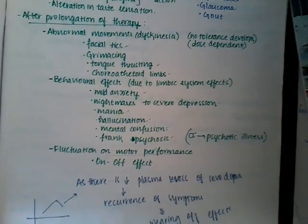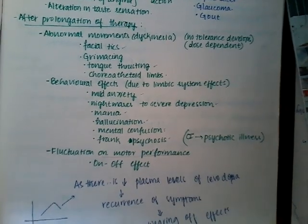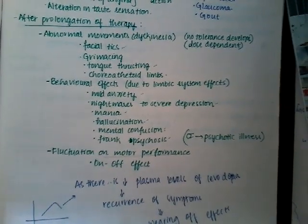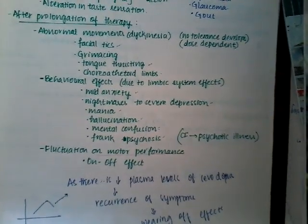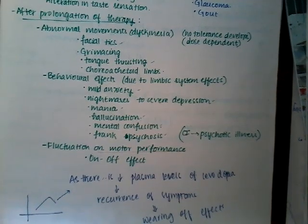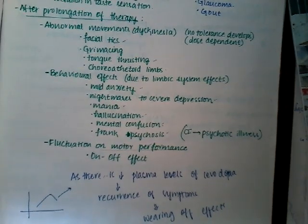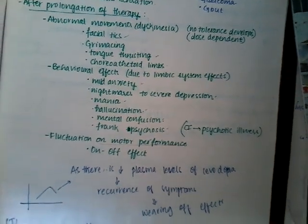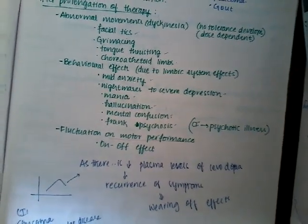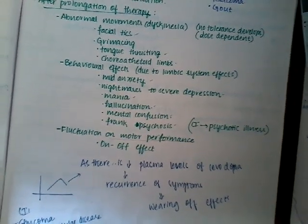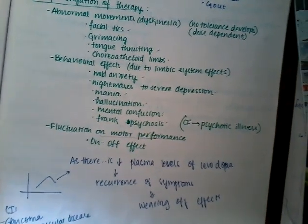After prolonged therapy, abnormal movements called dyskinesias can occur, including facial tics, grimacing, tongue thrusting, and choreoathetoid movements of limbs. These are mostly dose-dependent. Behavioral effects due to limbic system involvement can include mild anxiety, nightmares, severe depression, mania, hallucinations, mental confusion, and frank psychosis.